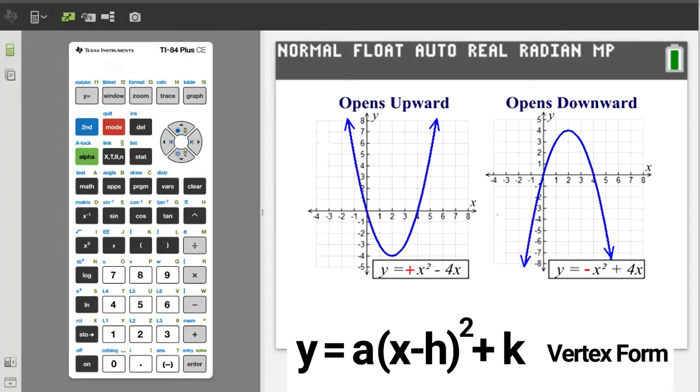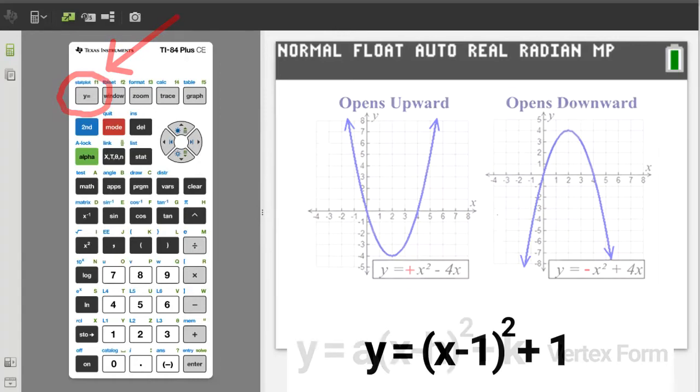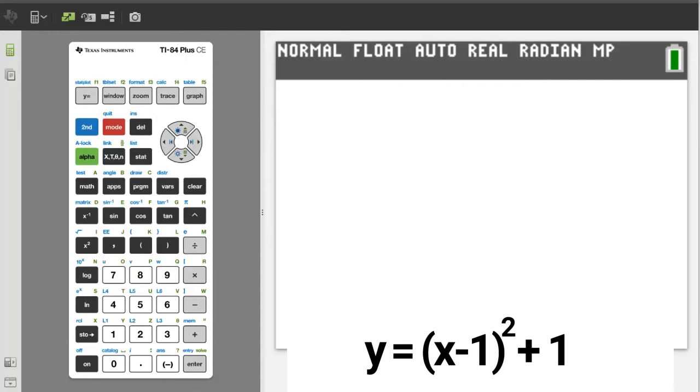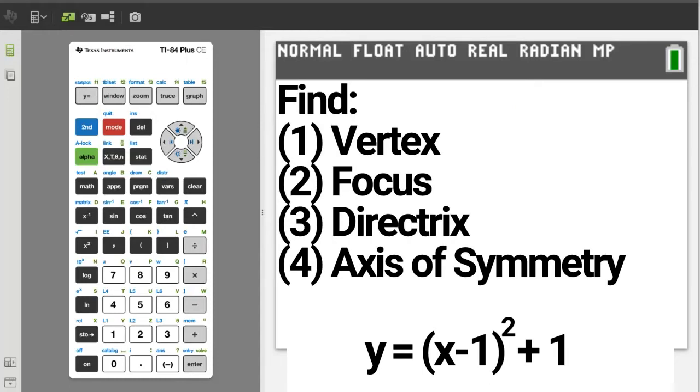Then you want to enter that equation using the y equals button. For example, you are given this equation of a parabola and asked to graph it, find the vertex, the focus, the directrix, and the axis of symmetry. Y equals x minus 1 squared plus 1.